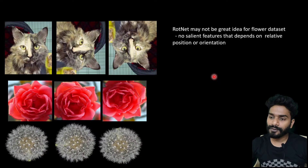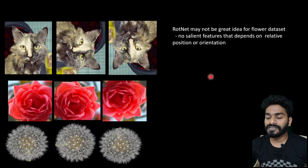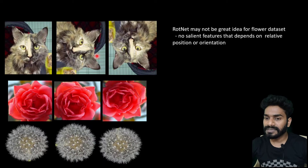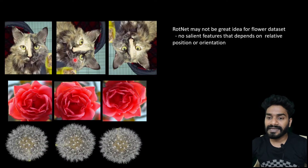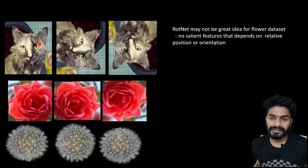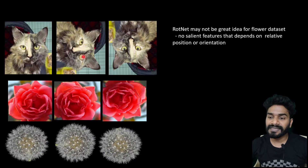Let's first discuss why RotNet may not be a great idea for the flowers dataset. If you see this image of a cat, you can clearly notice the differences: this is a normal cat, this is rotated 90 degrees, and this is rotated 180 degrees. The cat has salient features — nose, ears, eyes — that are easily visible and depend on the relative orientation with respect to the entire image. So we can tell from the image that this is 0 degrees, this is 90 degrees, because the eyes or ears are lying vertically.